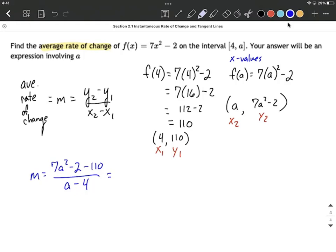I think we can do a little bit of simplifying down along the way here. Let's give it a shot. So we have like terms in the numerator. We can say 7A squared minus 112 over A minus 4. So far so good, but I think we can reduce down even a little bit further.